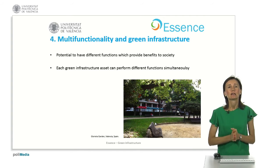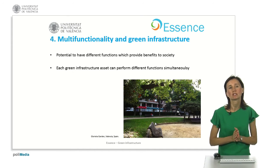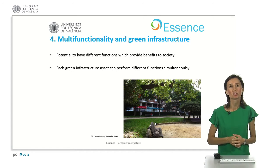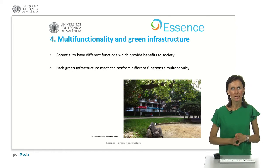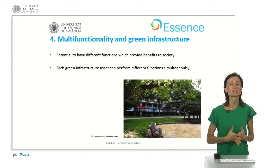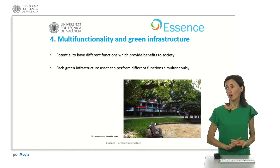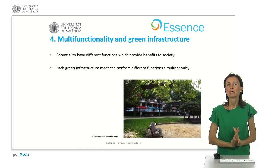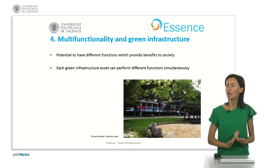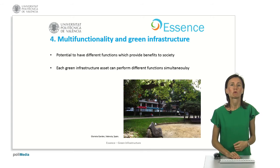Multifunctionality is a central concept in green infrastructure. It refers, first, to the potential of green infrastructure to have different functions — functions which provide a broad range of benefits to society, also called ecosystem services. Second, it refers to the idea that each green infrastructure asset can perform different functions simultaneously. For instance, this public garden in Valencia provides different functions at the same time: it provides shading, cools the air, absorbs surface runoff, and provides space for passive recreation and relaxation.